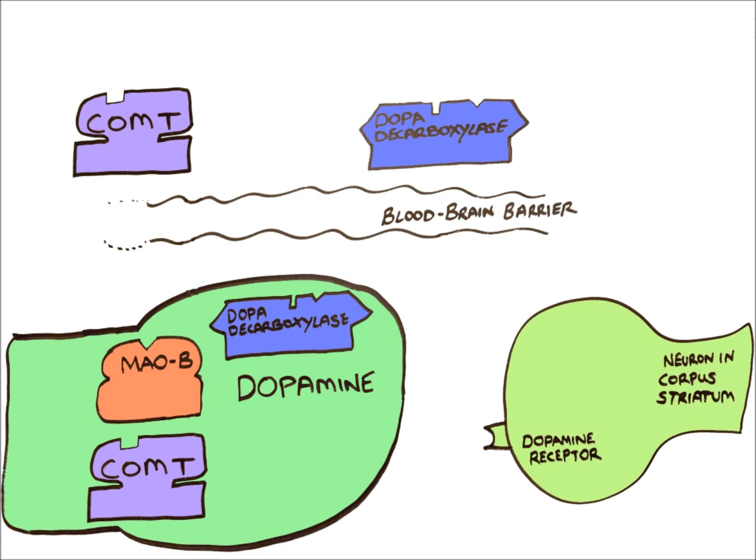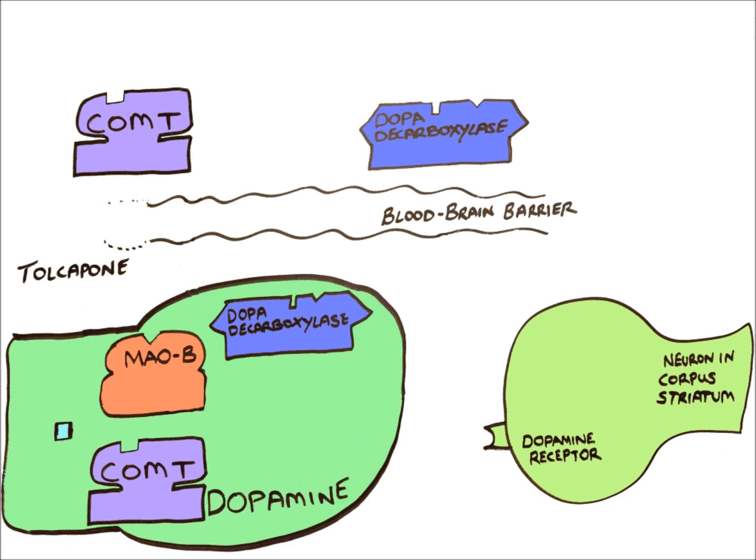To prevent this dopamine being broken down by MAOB, an MAOB inhibitor such as selegiline can be used. And to prevent dopamine being broken down by centrally acting COMT, a COMT inhibitor such as tolcapone can be administered.